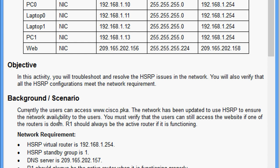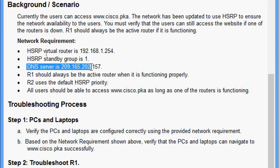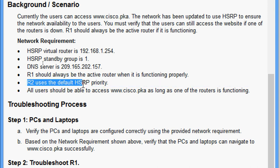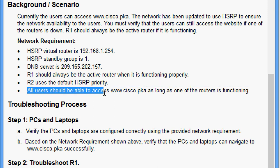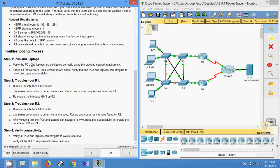Currently the users can access www.cisco.pka. The network has been updated to use HSRP to ensure network availability to the users. We must verify that users can still access the website if one of the routers is down. R1 should always be the active router if it is functioning. The HSRP virtual router IP is 192.168.1.254, HSRP standby group is 1, and DNS server is 209.165.202.157. R1 should always be the active router when functioning properly, and R2 uses the default HSRP priority.